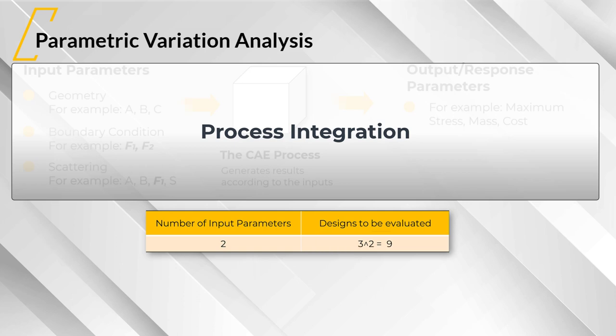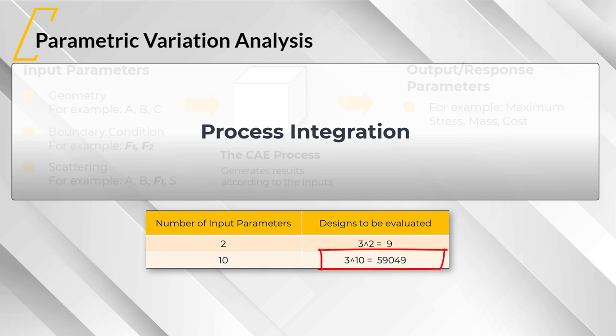But then you count the real number of parameters and end up with 10, 50, or 100 parameters. Let's imagine we have only 10 parameters. To cover again all combinations with three levels means running more than 50,000 designs. This is the problem.